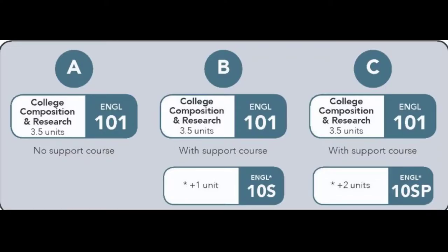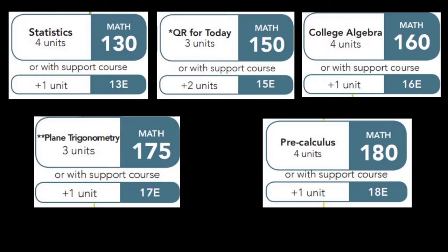For example, all students will be able to enroll in English 101 with the required support course English 10SP. Some students will enroll in English 101 with the required support course English 10S, and others will enroll in English 101 without a support course. Support courses are also available for Math 130, Math 150, Math 160, Math 175, and Math 180.